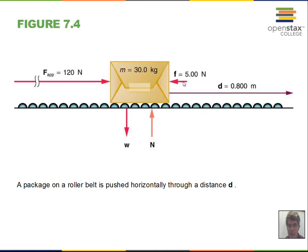Friction is also doing work on the box. The friction force points to the left while displacement is to the right, so this is negative work. When force is in the same direction as displacement, work is positive; when opposite, work is negative. Five Newtons times 0.8 meters gives minus 4 joules. The net work is 96 minus 4, giving 92 joules of work done on the box.